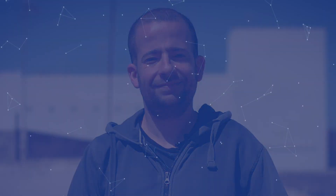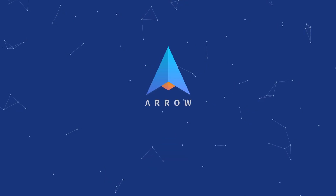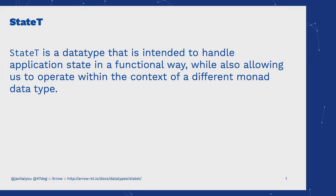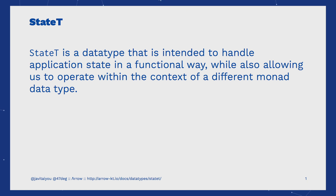Welcome to this series of videos about functional programming in Kotlin with Arrow. Arrow is a library that comes packed with lots of data types and type classes in order to bring typed functional programming to Kotlin. Today we're going to learn about the StateT data type, what it is and how to use it. StateT is a data type that is intended to handle application state in a functional way, while also allowing us to operate within the context of a different monad data type.